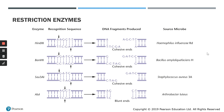There are multiple different restriction enzymes isolated from various bacterial species, and they are named after the bacterial host from which they were isolated. For example, HindIII was isolated from Haemophilus influenzae, BamHI from Bacillus, SauIIA from Staphylococcus aureus, and AluI from Arthrobacter luteus. Each of these restriction enzymes has different recognition sites.